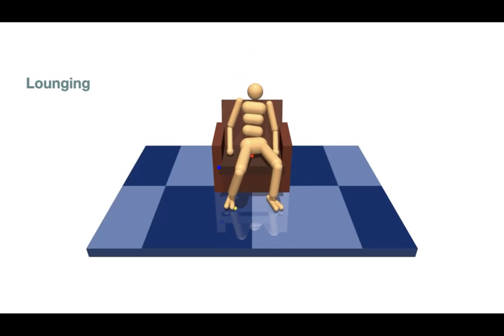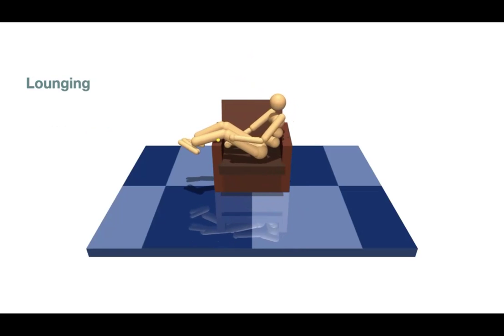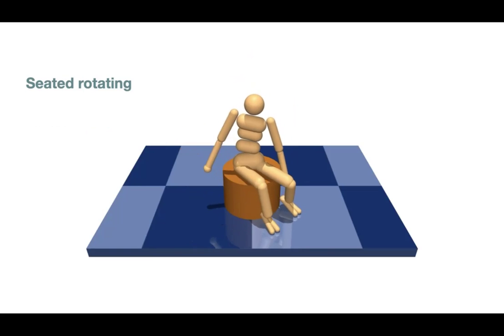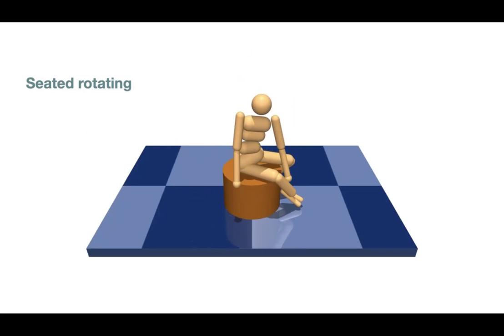Contact keyframes are authored without any reference motion capture. Even if the contact points are not very accurate, our method can generate interesting motions. In this task, there are three active contact pairs per keyframe, which are procedurally generated to move around the stool. Our method is able to extrapolate the upper body motion to complete this rotation.